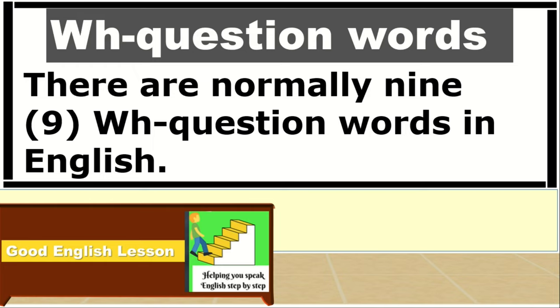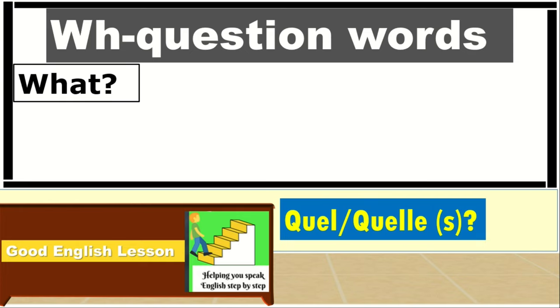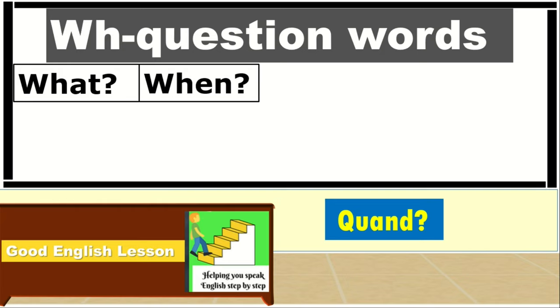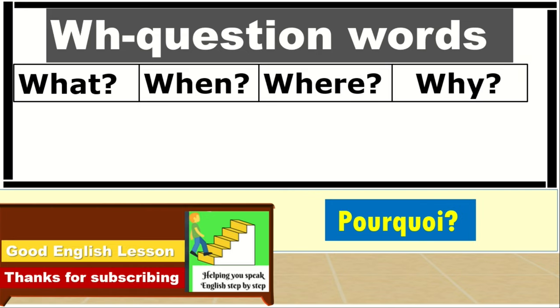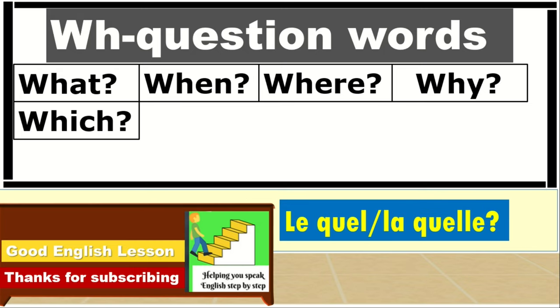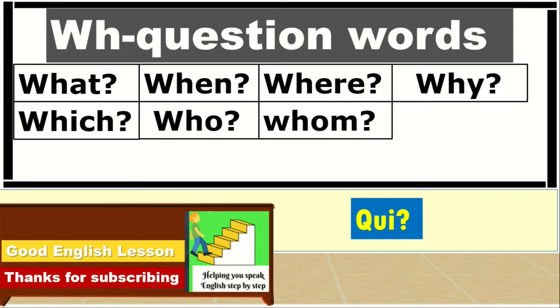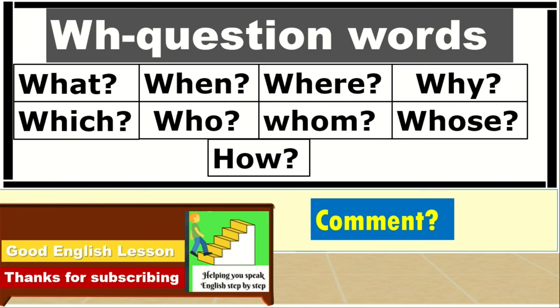There are normally nine wh-question words in English: which, what, when, where, why, which, who, whom, whose, and how.